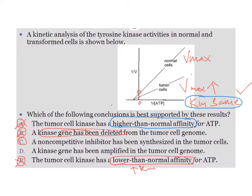Option C says a non-competitive inhibitor has been synthesized in the tumor cells. To evaluate this, you need to know the effect of a non-competitive inhibitor on enzyme kinetics. A non-competitive inhibitor does not compete with the substrate; instead it binds to a site other than the active site. By binding there, it changes the conformation of the active site, so the substrate cannot fit well and the velocity of the reaction goes down.